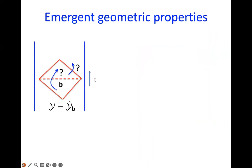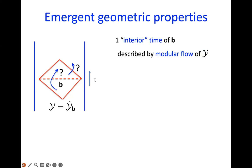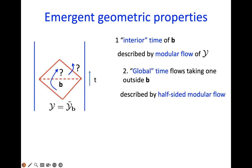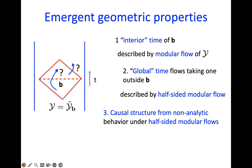Generalizing the black hole story to this context: suppose we have a boundary algebra dual to the bulk operator algebra in region B. The interior time of B is described by modular flow, the global time by half-sided modular flow, and the causal structure from non-analytic behavior. In principle, if I know the algebra in the boundary theory, I can reconstruct this bulk region including all its notions of time, horizons, and causal structure. At the moment, we can reconstruct the causal structure more than the full metric, but with more powerful techniques we may be able to reconstruct the metric.